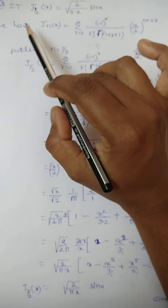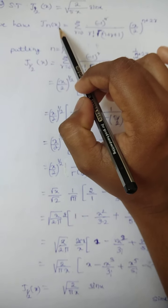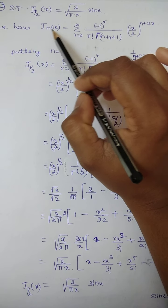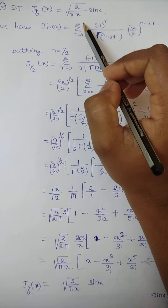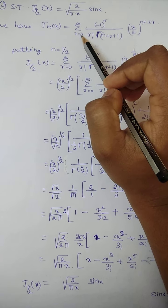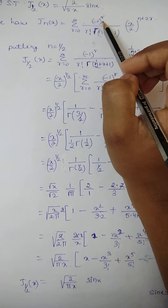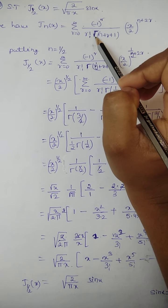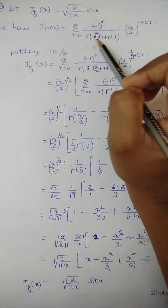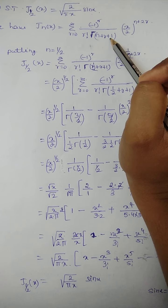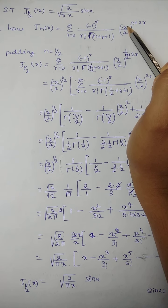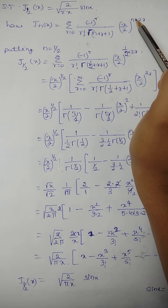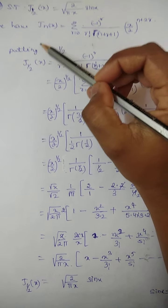We know, and have already proved, that the Bessel's equation is: Jₙ(x) = summation from 0 to infinity of (-1)^r divided by r! · Γ(n + r + 1), multiplied by (x/2)^(n+2r).